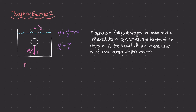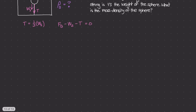We know that T is equal to one-third the weight of the sphere — that's given in the problem. And we know this entire system is in static equilibrium, so the forces should balance out. In other words, F sub b minus the weight of the sphere minus the tension equals zero. Rewriting: F sub b equals the weight of the sphere plus the tension force.